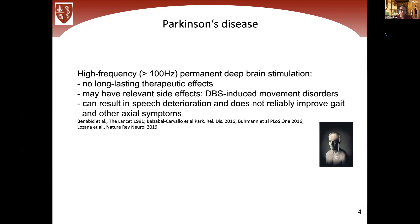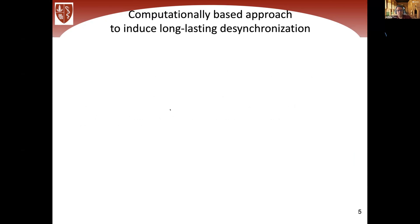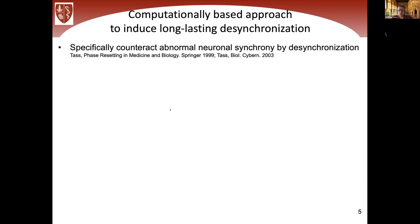One of my goals was to come up with something more efficient and milder — to design stimulation techniques that use just a little amount of current but effectively counteract the abnormal activity. The very important point is: you can do all sorts of things to affect brain activity — suppress it, inhibit it, induce artificial rhythms. What we want to do — and that's the fundamental goal — is to specifically counteract abnormal synchrony by desynchronization. The neurons should continue to be active, because only active neurons are able to unlearn and change their connectivity patterns.